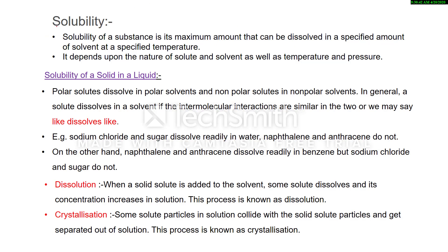First, what is the meaning of solubility? Solubility of a substance is its maximum amount that can be dissolved in a specified amount of solvent or solution at a specified temperature. It depends upon the nature of solute and solvent as well as temperature and pressure.